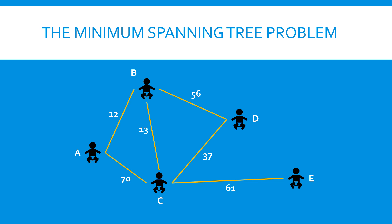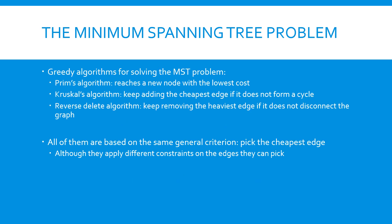Recall the minimum spanning tree problem, or the MST problem. We are given a connected undirected graph with weighted edges, where all weights are non-negative. The objective is to find a subset of edges that connects all nodes in the graph while minimizing the total weight. The MST problem can be solved using several greedy algorithms. In the previous videos, we discussed Prim's algorithm, Kruskal's algorithm, and the reverse-delete algorithm.